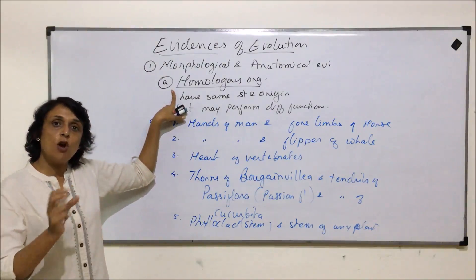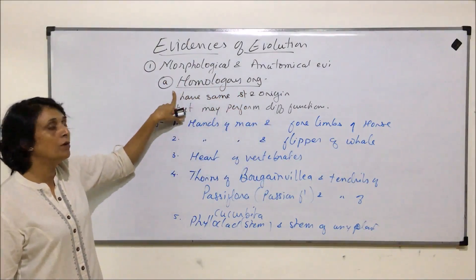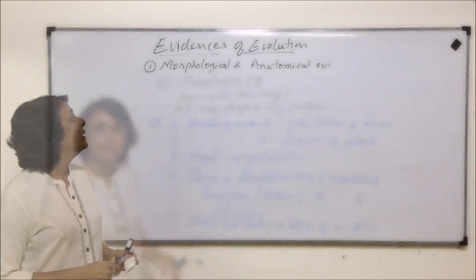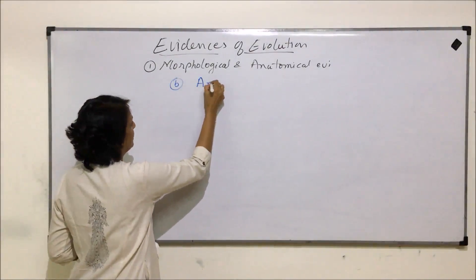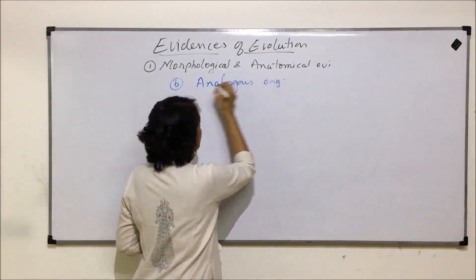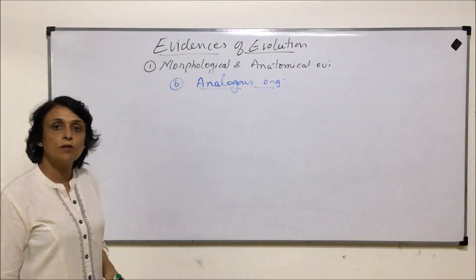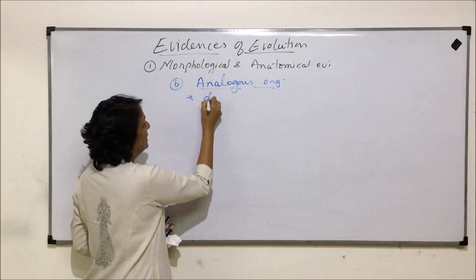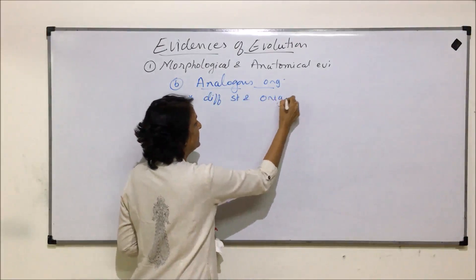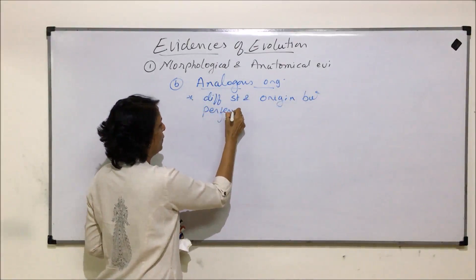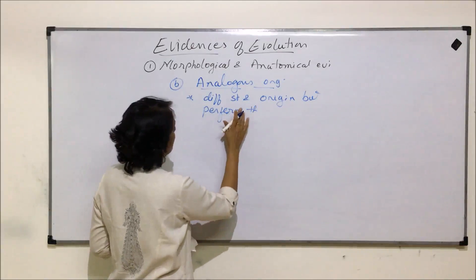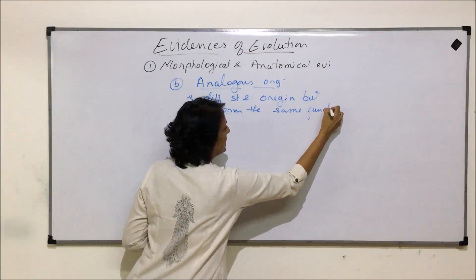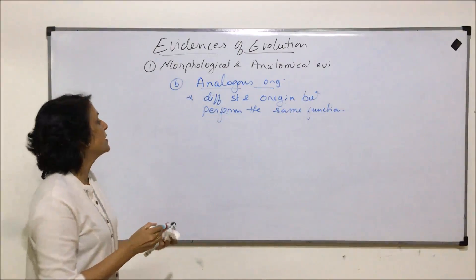Similar to homologous organs but just the opposite are analogous organs. This is the next subcategory under morphological and anatomical evidences. Analogous organs are organs with different structure and origin but which perform the same function.